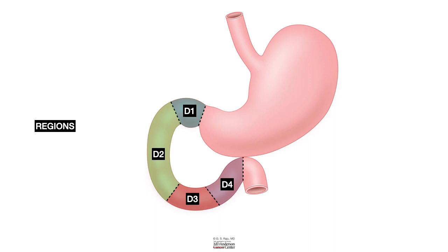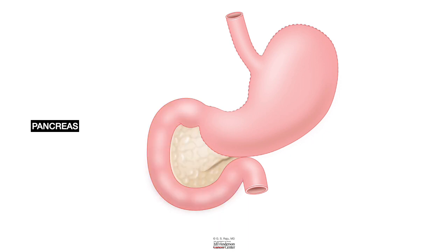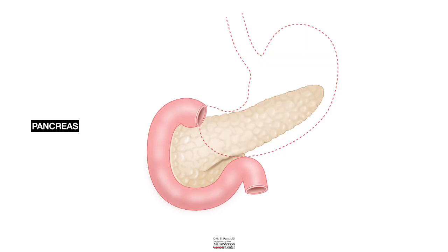This C loop of the duodenum is closely related to the pancreas. The pancreas lies snugly in that C loop of the duodenum. The majority of the pancreas — especially the body and tail — are behind the stomach. When you remove or lift the stomach, you can expose the remaining portion of the pancreas going across the body and the tail.